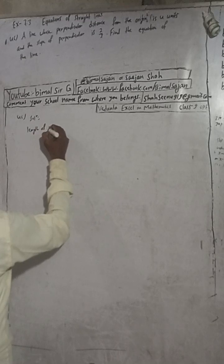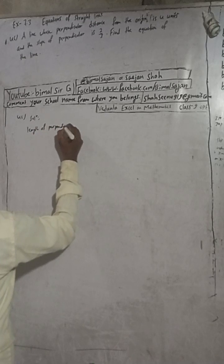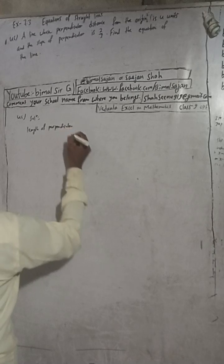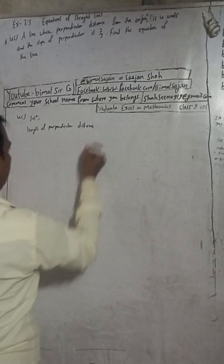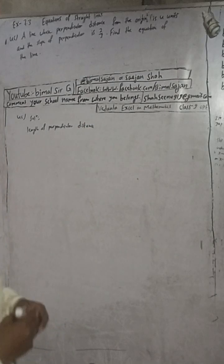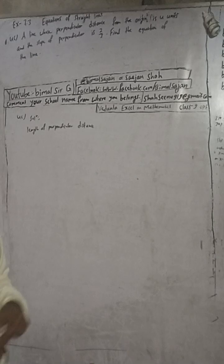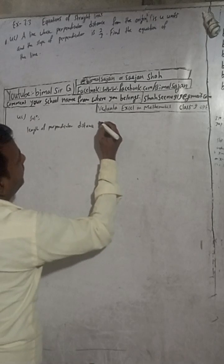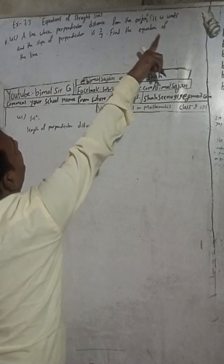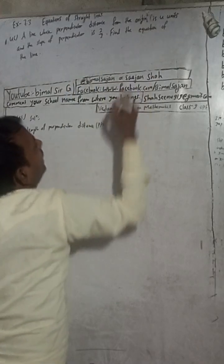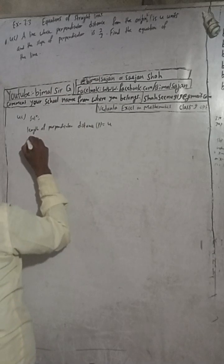Length of perpendicular distance, denoted by P, is equal to — here it is given — 4 units. So write P = 4. And the slope of perpendicular, so slope of perpendicular.